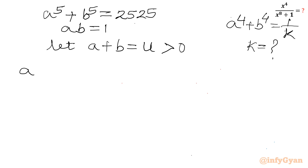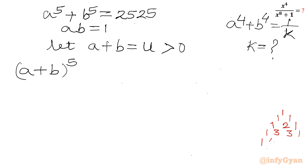I will write the binomial expansion for (a + b)⁵. For this we should know the coefficients of expansion using Pascal's triangle. For power 2: 1, 2, 1. For power 3: 1, 3, 3, 1. For power 4: 1, 4, 6, 4, 1. And for power 5, which is required here: 1, 5, 10, 10, 5, 1.